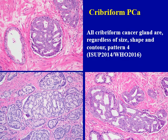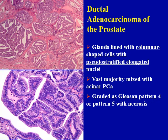Here are several examples of cribriform carcinoma of different size, shape, and contour. Remember, all cribriform carcinoma glands should be graded as pattern four. In ductal adenocarcinoma, I use very strict diagnostic criteria. Only when the cancer glands are lined with columnar-shaped cells with pseudostratified elongated nuclei will I make the diagnosis of ductal carcinoma. In the majority of cases, ductal carcinoma is actually mixed with conventional acinar carcinoma. It is graded as pattern four, or pattern five if necrosis is present.